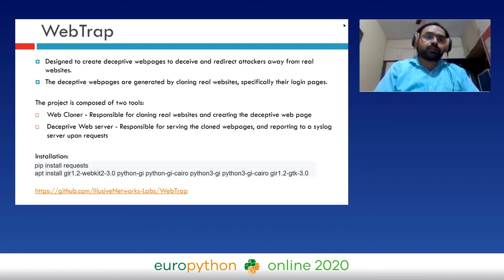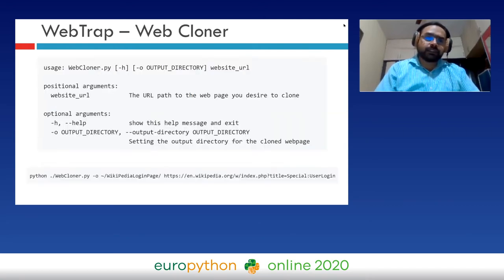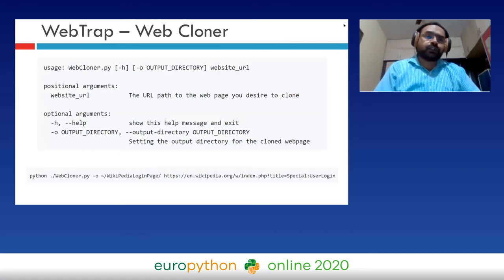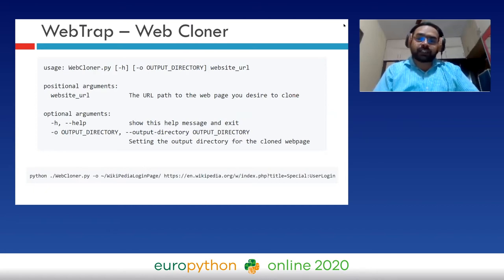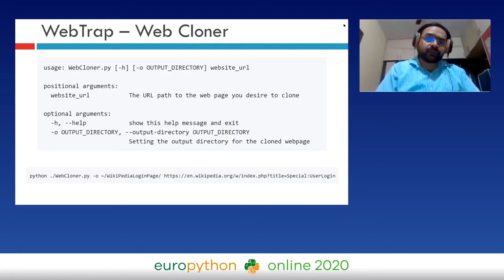Note that the Web Trap tool currently works only on Ubuntu 18. Usage is shown in the slide: you use the webcloner.py file, specify the output directory, and provide the website URL you want to clone. For example, here we are cloning Wikipedia's login page into a directory called 'wikipedia login page.'